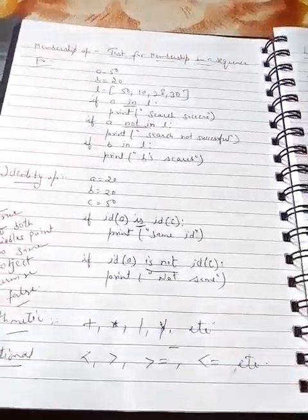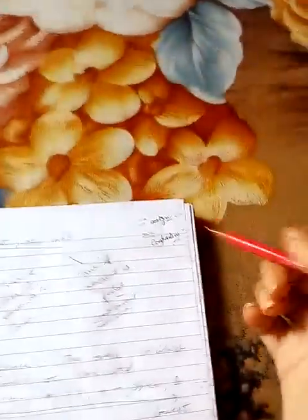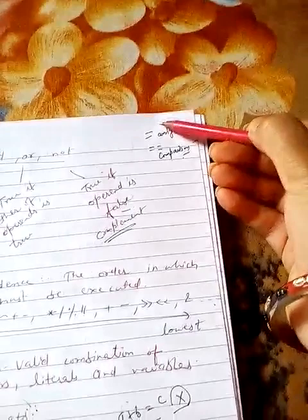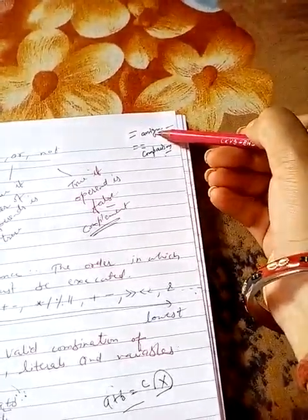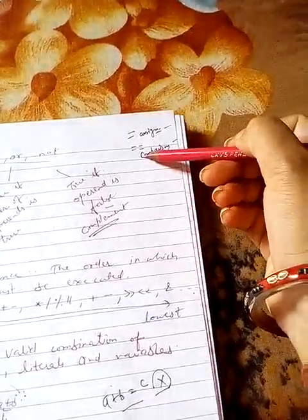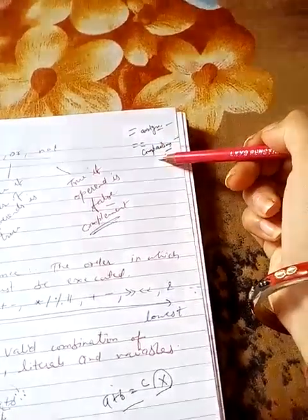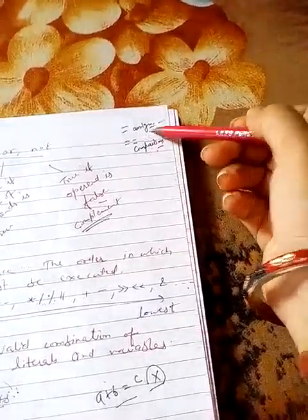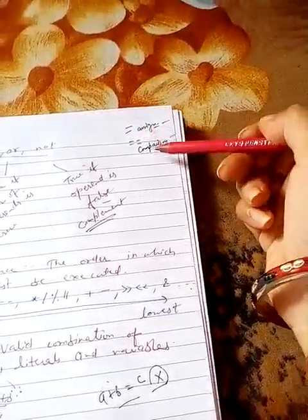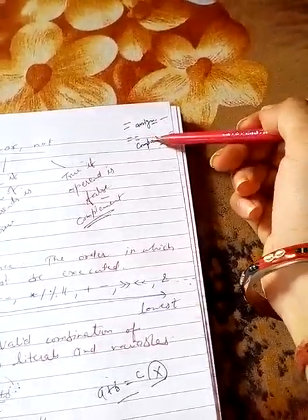Here is a note. If we include here only a single equal to here that means it's assigning operator. We can assign any value to variable and if we take here double equal to that means it is comparison operator. So make this point in your mind very clear. These are two operators. Assignment operator with a single equal to sign and comparison operator with double equal to sign.